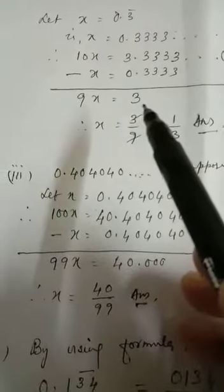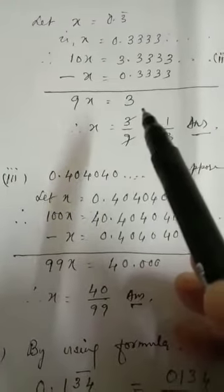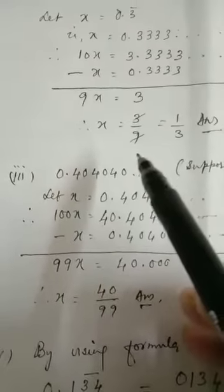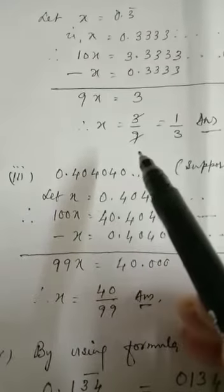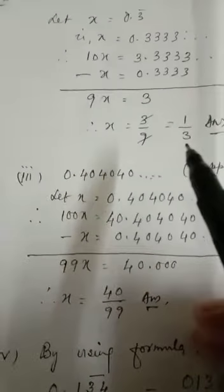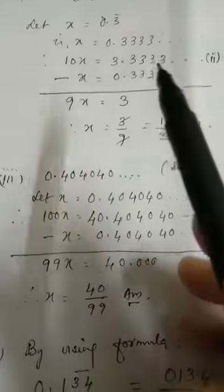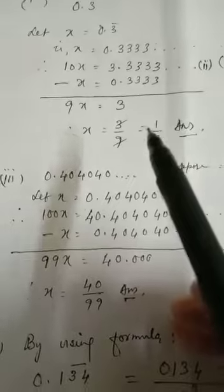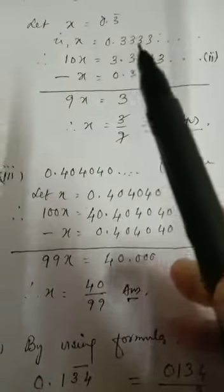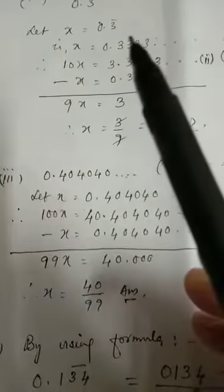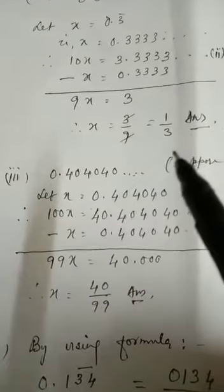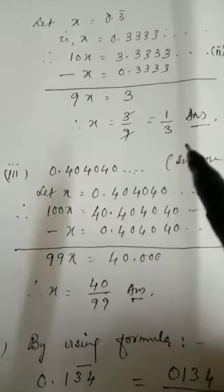So you get 9x is equal to 3. Therefore you get x is equal to 3 by 9. Reduce it, and then you get x is equal to 1 third. So this way you can express this recurring decimal into fractions. So 0.3 bar is equal to 1 by 3.